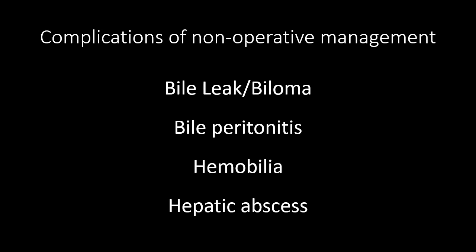When considering complications from non-operative management of high-grade liver injury, bile leak and biloma are the most common. An uncontained bile leak into the abdominal cavity can result in bile peritonitis, causing abdominal pain, leukocytosis, and hyperbilirubinemia from bile resorption. You can also get hemobilia — a communication between a vascular structure and the biliary tree — as well as hepatic abscess from superinfection of a hematoma, parenchymal disruption, or biloma. Many of these complications can still be managed non-operatively with ERCP and stenting, percutaneous intervention, or embolization, though operative management may be required based on patient stability.